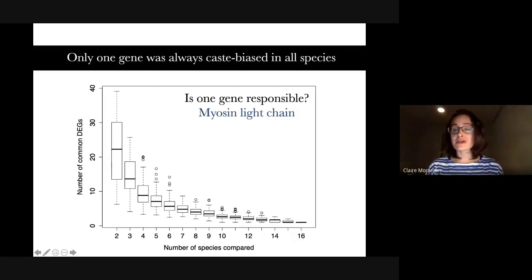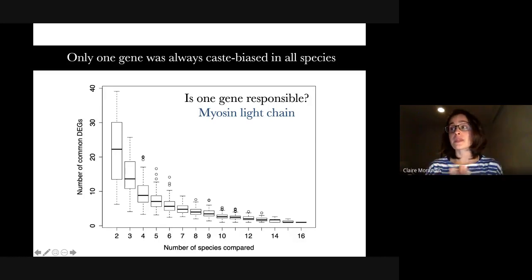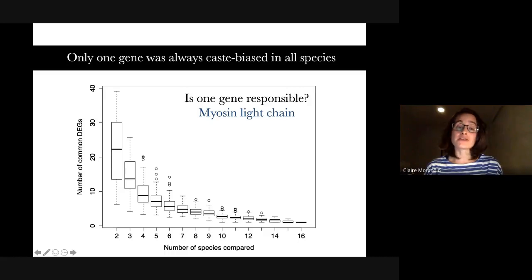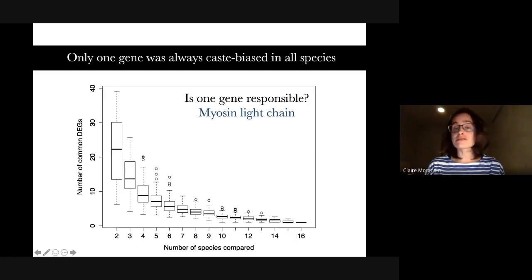By examining caste-biased gene expression patterns, we found that if we compare only two or three species, we could find quite a lot of genes differentially expressed and shared among these species. But the more species we added, the shorter the list of shared differentially expressed genes became. We also found hundreds or even thousands of genes differentially expressed in one single species. When we looked at all 16 species, we could only find one gene that was always differentially expressed.